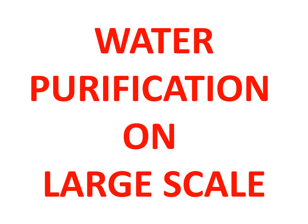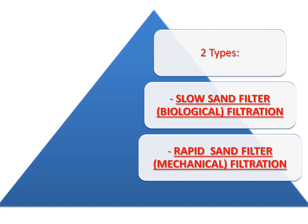There are three steps in the process of water purification. The first step is storage, the second step is filtration, and the third step is disinfection. Today we will focus on the method of purification. There are basically two types of purification methods: one is called the slow sand filter or biological filtration, and the second type is called the rapid sand filter or mechanical filtration.